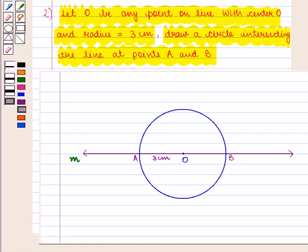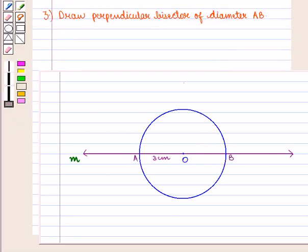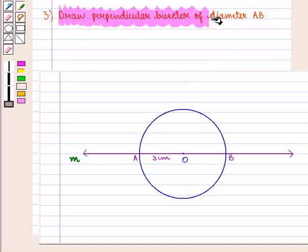We need to construct a square within this circle, so points A and B will be two vertices of the square. Now we shall draw the perpendicular bisector of diameter AB.